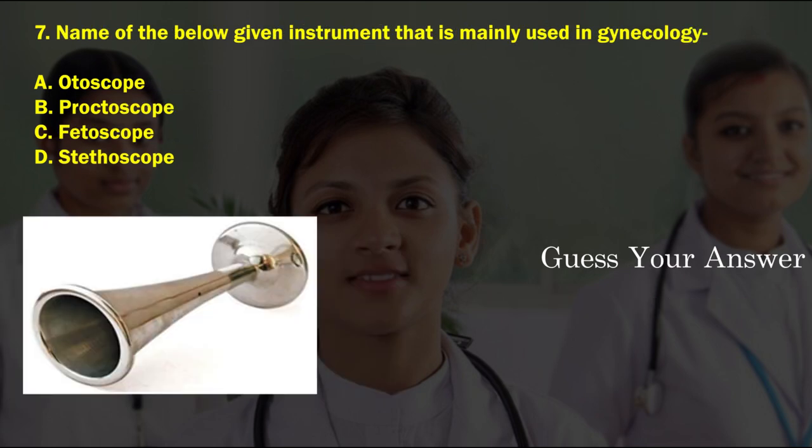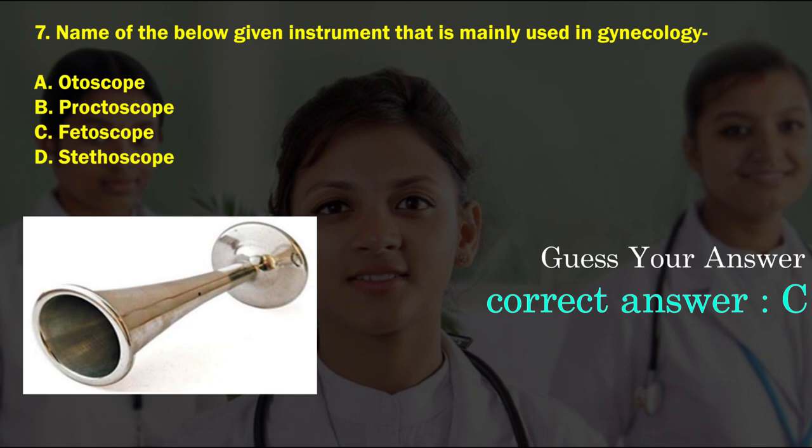Name of the below given instrument that is mainly used in gynecology. Option A: otoscope, option B: proctoscope, option C: fetoscope, option D: stethoscope. The correct answer is option C, fetoscope.